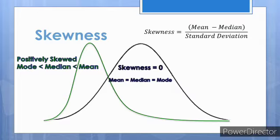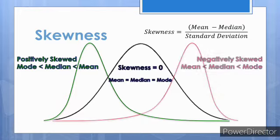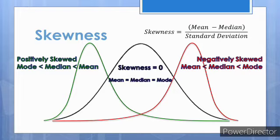Interestingly, positive skews are more common than negative ones. Negative skewness means there is a pileup of data to the right with a long tail on the left side. In this case, the mean is to the left of the median. To remember the direction: think of pulling on tails — the tail points towards the direction of the skew, and the mean is also pulled in the direction of the long tail.